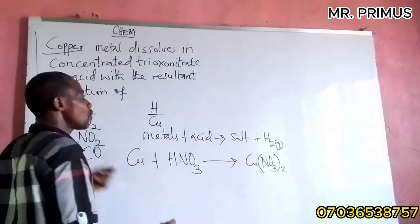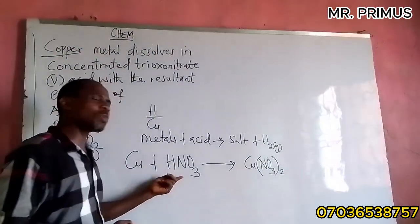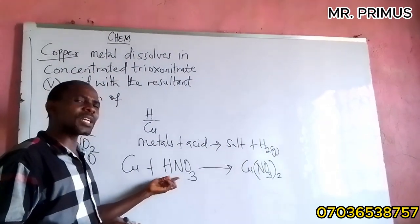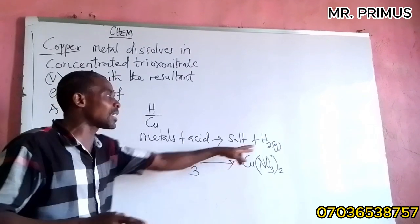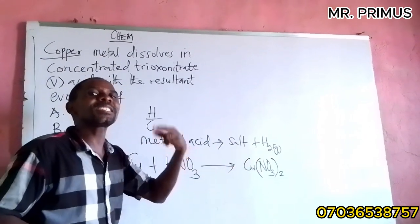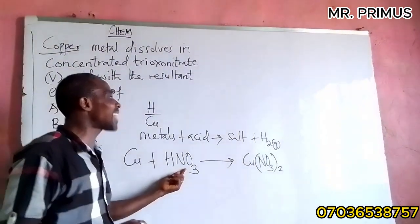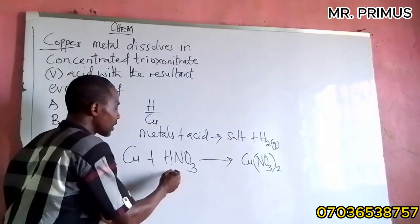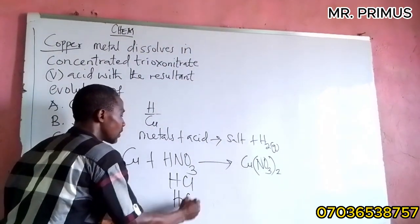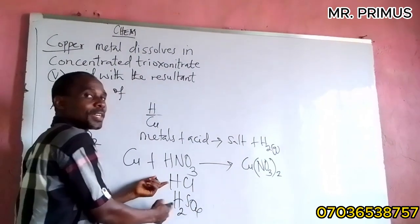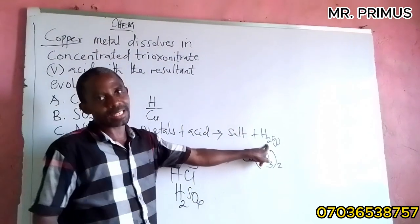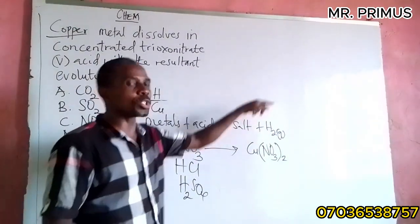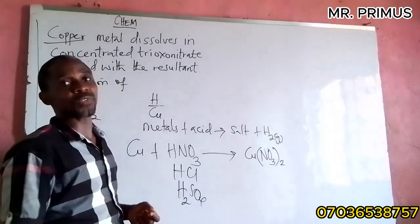So when copper reacts with nitric acid it will produce this salt. Now watch: concentrated nitric acid is an oxidizing agent. Concentrated nitric acid will not give you hydrogen gas. Instead, what it does is that it will oxidize hydrogen to water. Unlike other acids like hydrochloric acid or tetraoxosulphate(VI) acid which when they react with metals will definitely give you hydrogen gas. But nitric acid will oxidize hydrogen to form water.